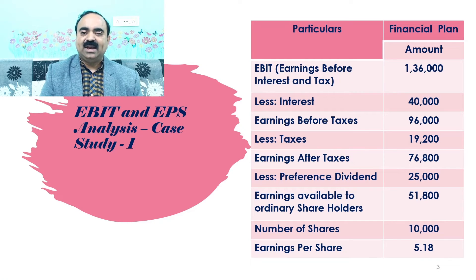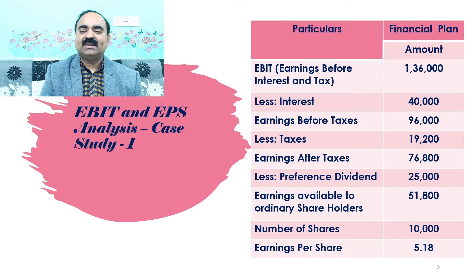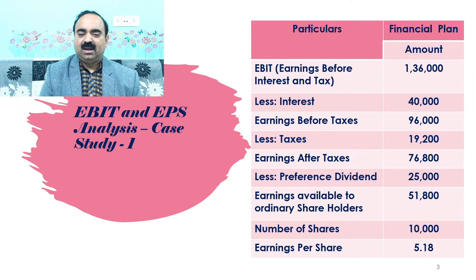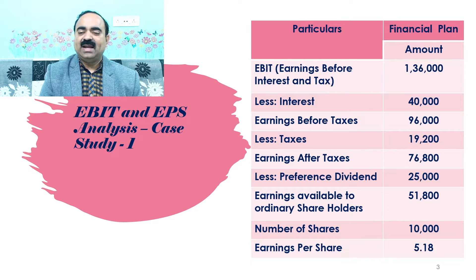Dear students, I had given two columns in EBIT and EPS Analysis format. In the first column I had shown particulars, and in the second column I had shown financial plan and amounts. EBIT in this problem is given as ₹1,36,000. We need to deduct interest from EBIT in order to get earnings before taxes. Interest is calculated as ₹40,000, with calculations shown under working note number 1 in the next slide.